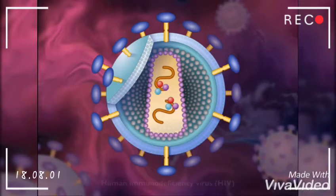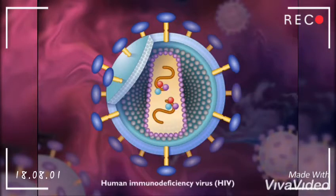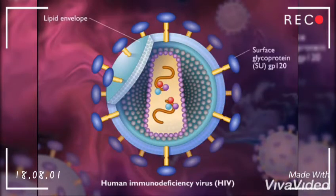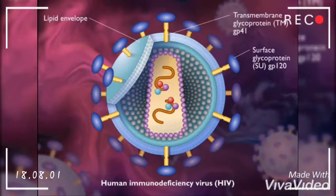AIDS is caused by the human immunodeficiency virus, HIV. This is an enveloped virus. The envelope is a lipid layer derived from the host cell membrane with viral glycoproteins such as gp120 and gp41 inserted into the membrane as the virus leaves the cell.